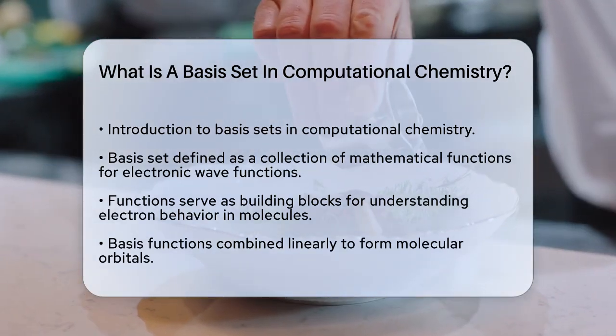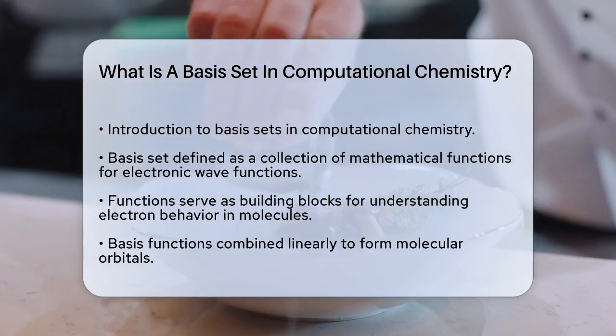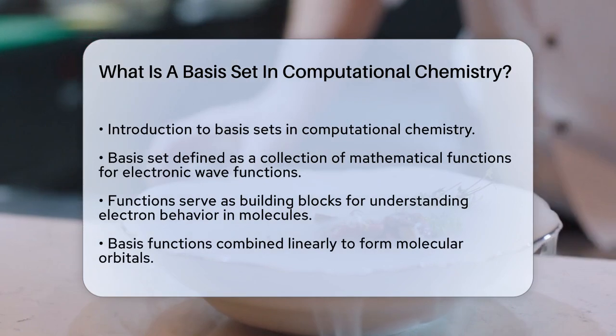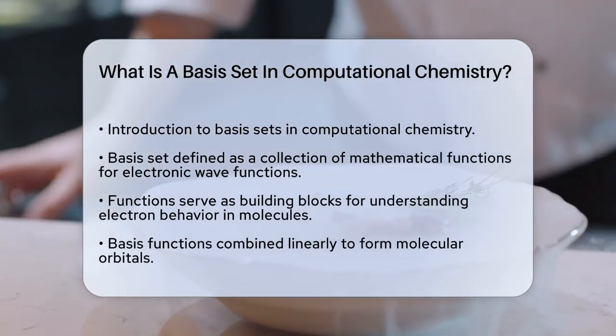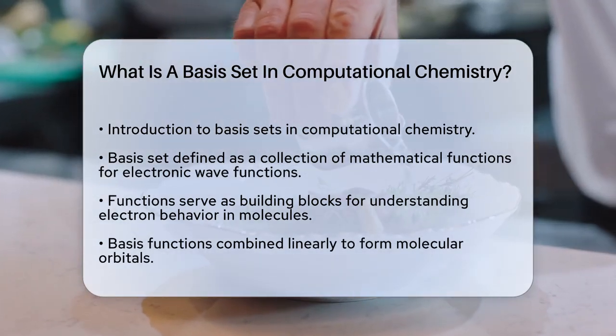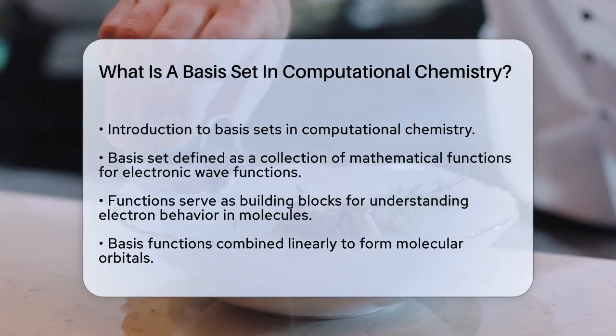In computational chemistry, a basis set is essentially a collection of mathematical functions used to describe the electronic wave function of a molecule. Think of these functions as the building blocks that help scientists create a detailed picture of how electrons behave within a molecule.